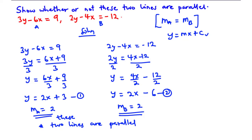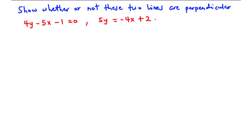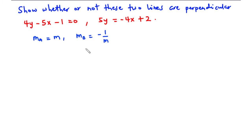Now let's talk about perpendicular lines. Two lines are said to be perpendicular if the product of their gradients is negative 1. What this primarily means is that if the gradient of line A is m, then the gradient of line B is the negative reciprocal of the gradient of line A, so that when you multiply the two gradient values, you get negative 1.